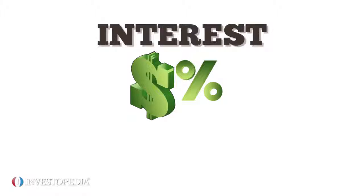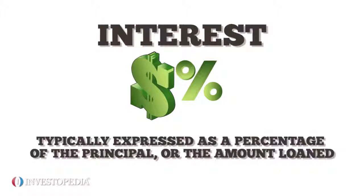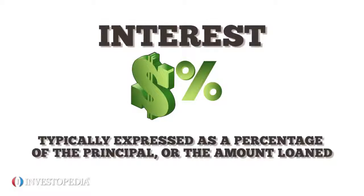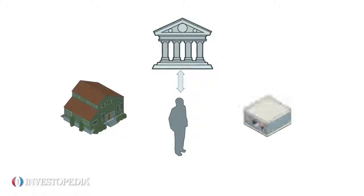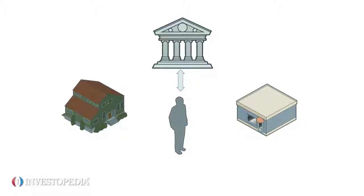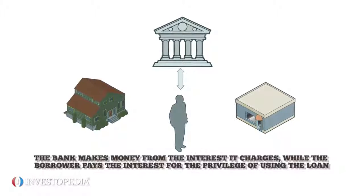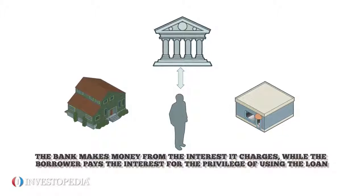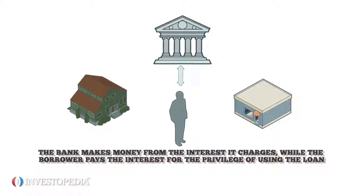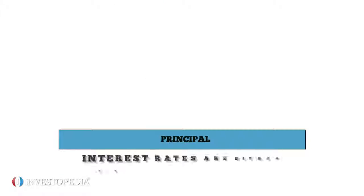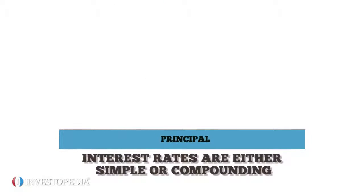Interest is the price charged to borrow money and is typically expressed as a percentage of the principal, or the amount loaned. Someone who borrows money from a bank to buy a house or open a business will pay interest on the loan. The bank makes money from the interest it charges, while the borrower pays the interest for the privilege of using the loan.